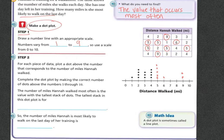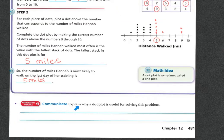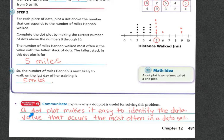The reason I skipped the 1 through 4s is because they've already plotted them for you. So the tallest stack in the dot plot is 5. If you notice, 5 has the tallest. Therefore, 5 miles is the one that she walked the most for. So the number of miles that Hannah most likely walked on the last day of her training is 5 miles. A dot plot makes it easier to identify the data value that occurs the most often in a data set.